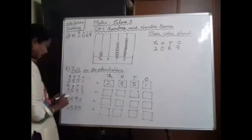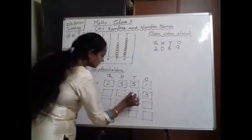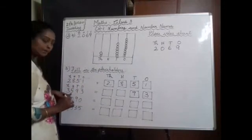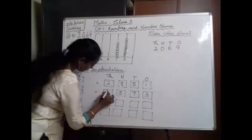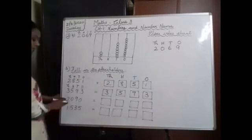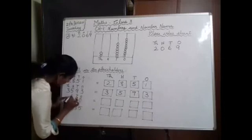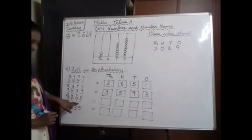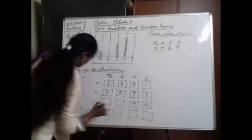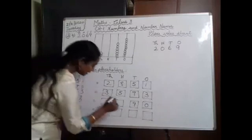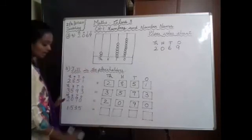Next number: we start from the 1s place. In the 1s place, the number given is 3. In the 10s place, 9. In the 100s place, 5. In the 1000s place, 3. Next number is 2,090. Write 1s, 10s, 100s, 1000s. In the 10s place, 9. In the 100s place, 0. In the 1000s place, 2. So 2,090.